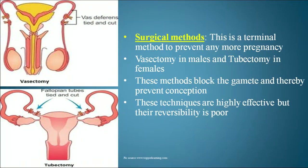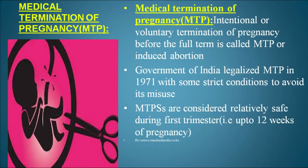Surgical methods are terminal methods to prevent further pregnancy. Vasectomy is performed in males and tubectomy in females. In vasectomy, the vas deferens is cut and tied with a suture; in tubectomy, the fallopian tube is cut and tied. These methods block gamete transport and prevent conception. They are highly effective but reversibility is poor. Medical Termination of Pregnancy (MTP), or induced abortion, was legalized by the Government of India in 1971 with strict conditions to avoid misuse. MTPs are considered relatively safe during the first trimester — up to 12 weeks of pregnancy.